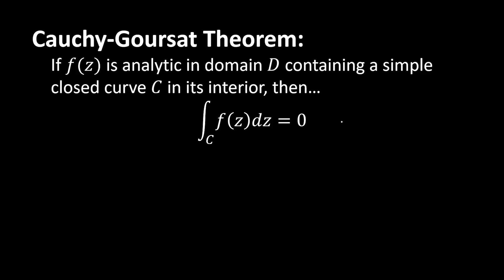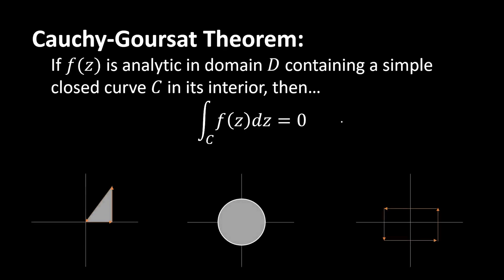What is a simple closed curve? Just as a reminder, that is one of these three shapes right here — there's a triangle, a circle, a rectangle. Basically something that doesn't overlap itself and just comes back around to its starting point. Really it could be any kind of crazy shape, as long as it doesn't overlap — that's going to be a simple closed curve.